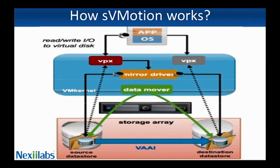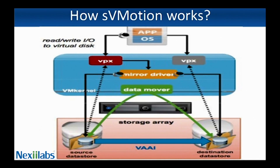In a single pass, a copy of the virtual machine disk files is completed to the target datastore while mirroring the I/O. If both the source and destination datastores are on the same array that is capable of using vSphere Storage APIs for Array Integration (VAAI), and the source host has access to the destination datastore, vSphere will intelligently offload the task of copying the disk content to the array using VAAI. The data mover can use API primitives to offload operations to the array if possible.